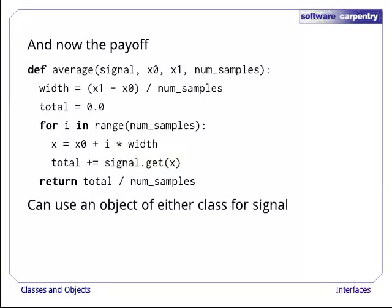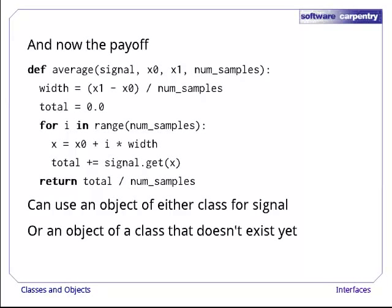What makes it special is this call right here. We can pass in an object of any class that provides a get method. Either step signal or linear signal, and average will work correctly. In fact, we can now write other classes with get methods that return samples, and average will still do the right thing. We don't have to come back and modify average or retest it.